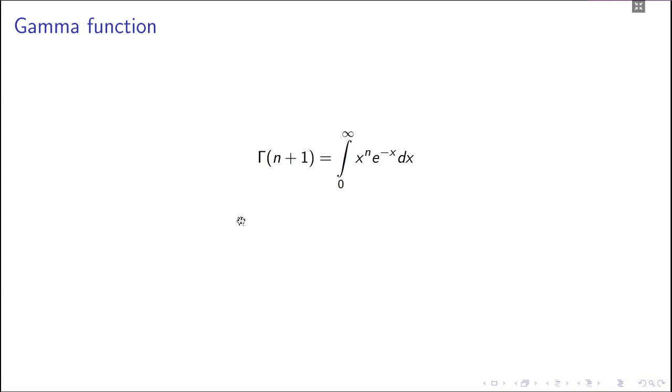Now, the gamma function is basically this integral: x to the power n, e to the power minus x, dx, and x goes from 0 to infinity. This is called gamma of n plus 1.